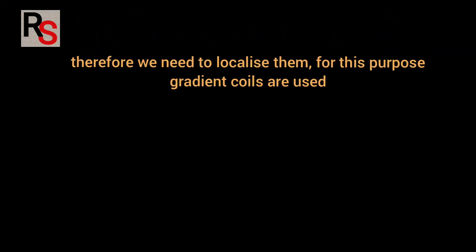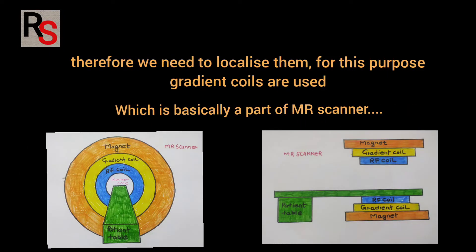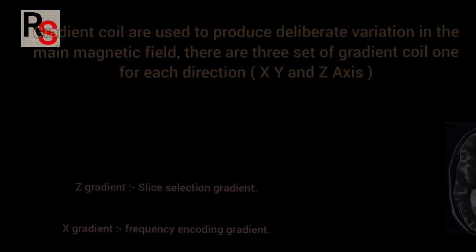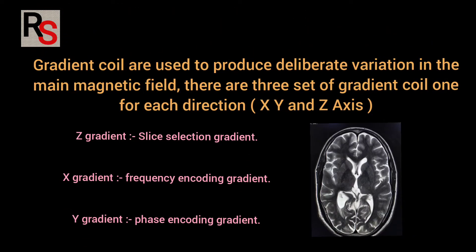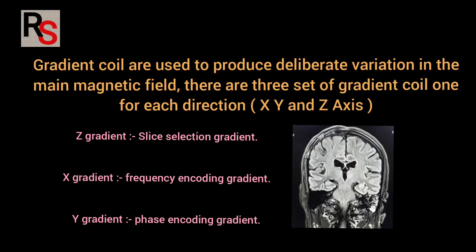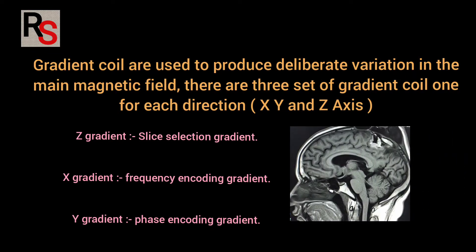For this purpose gradient coils are used, which is basically a part of MR scanner. Gradient coils are used to produce deliberate variation in the magnetic field. There are three sets of gradient coils, one for each direction: X, Y and Z.